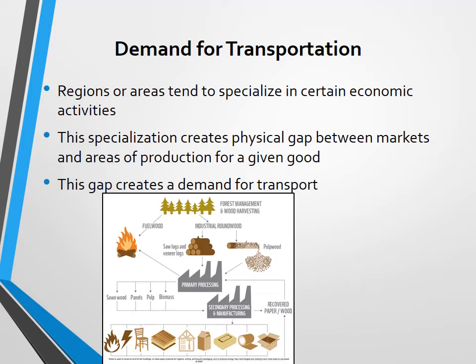Regions or areas tend to specialize in the production of certain goods or services. For example, in the state of Wisconsin there are a lot of factories producing furniture. So there is a cluster for that particular product, but the demand for furniture is not within Wisconsin — it is scattered throughout the US. So there is a gap between the production point and the consumption point, and transportation is the service which bridges that gap.